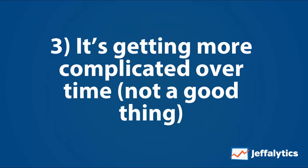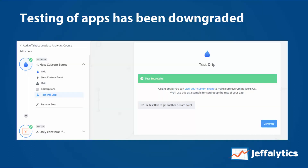Number three: Zapier is getting more complicated over time, and that is not a good thing. When I test an app and put in the triggers, a lot of times the test step doesn't work and I have to go in and create a new record. That's okay for an email address collection, but what about WooCommerce? You're making me do a real transaction in my own system. About 50% of the zaps I create now break because the testing step has gotten worse.